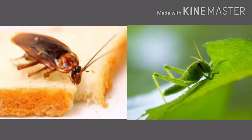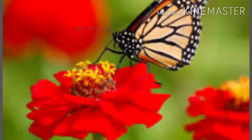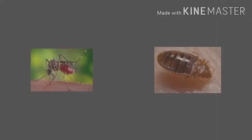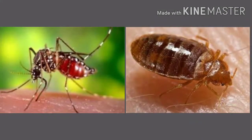Insects have mouth parts for ingestion of food. For example, insects like the cockroach and grasshopper, which nibble, have jaw-like mouth parts. Butterflies suck food with a tube-like proboscis. Mosquitoes and bedbugs use a needle-like mouth part to prick and a tube-like mouth part to suck blood or other fluids.